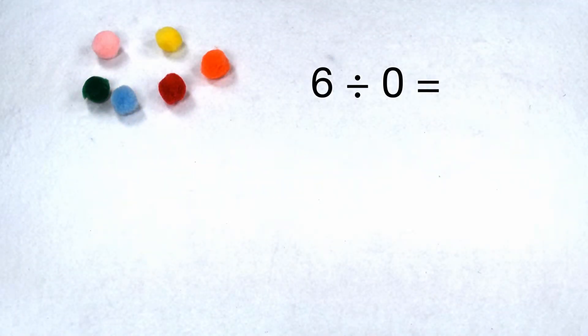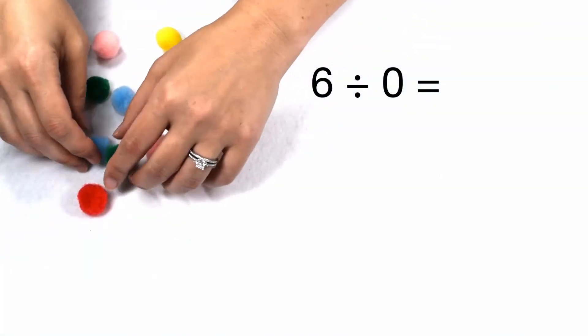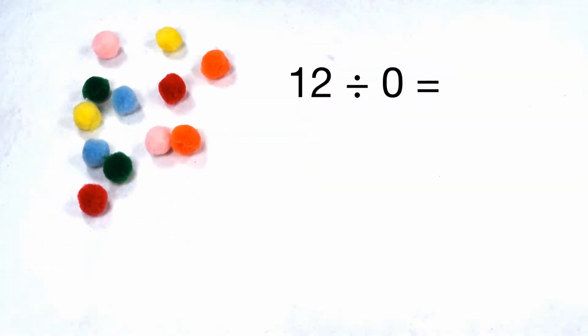Well, what happens if we change our dividend to a larger number? What happens if I try to do 12 divided by zero?